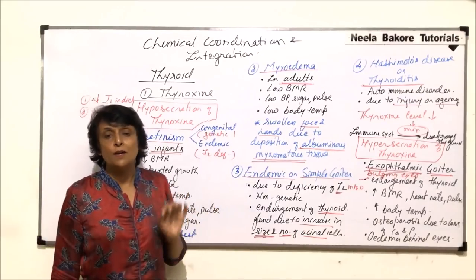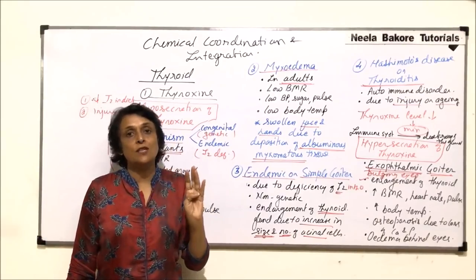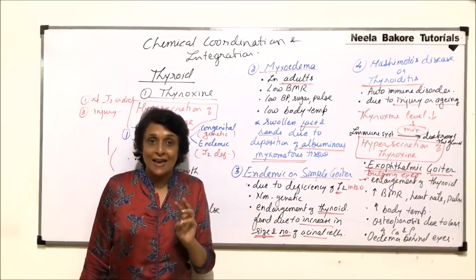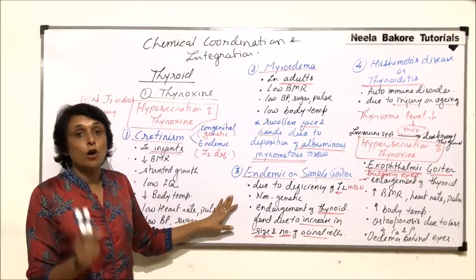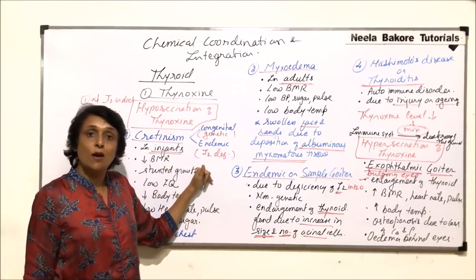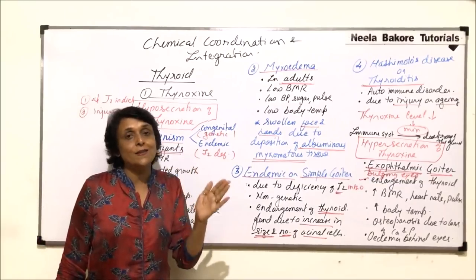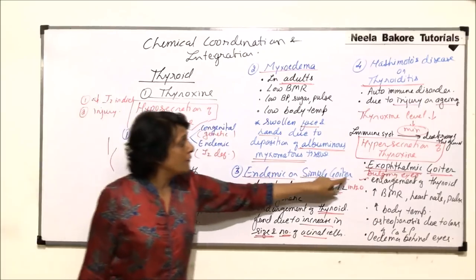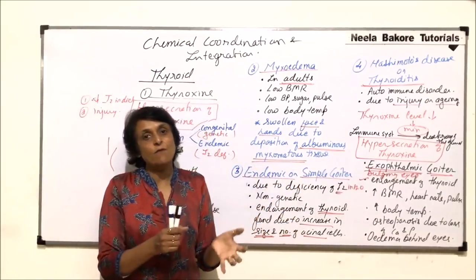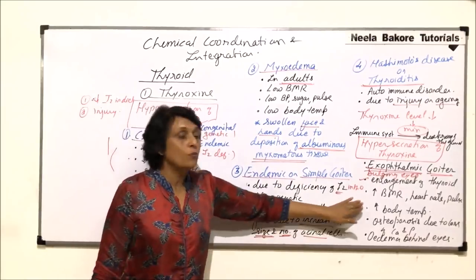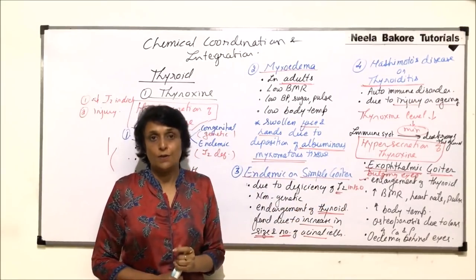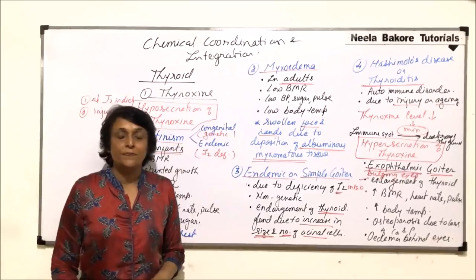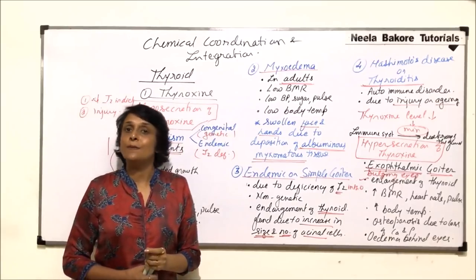We have understood the functions of thyroxine. The main functions are BMR-related, which directly affect physical, mental, and sexual growth. If this hormone is less in secretion or concentration, all these things would be lower, resulting in various kinds of conditions. And if secretion is more than normal, then the same functions get enhanced, which would again result in disorders. This is about the first hormone of the thyroid gland, that is thyroxine. Next, we would take up the next hormone.